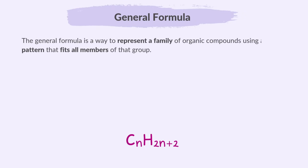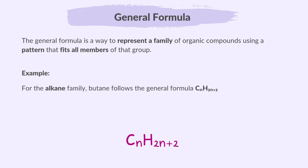The general formula is a way to represent a family of organic compounds using a pattern that fits all members of that group or homologous series. For example, for the alkane family, butane follows the general formula CnH2n+2. In organic chemistry, n in a general formula typically represents the number of carbon atoms in a molecule within a homologous series. For butane, n is equal to 4, so the general formula becomes C4H10.